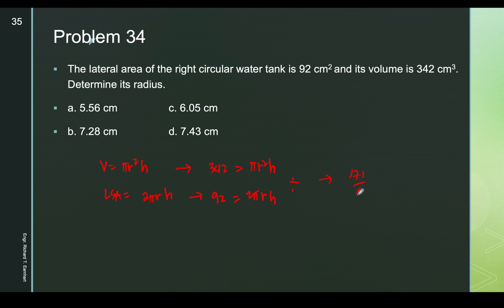Dividing the two equations: 342/92 = 171/46. The π terms and h terms cancel, leaving an expression involving r. Solving gives 4r = 171/46 × related terms, and ultimately r = 7.43 cm, which is letter D.